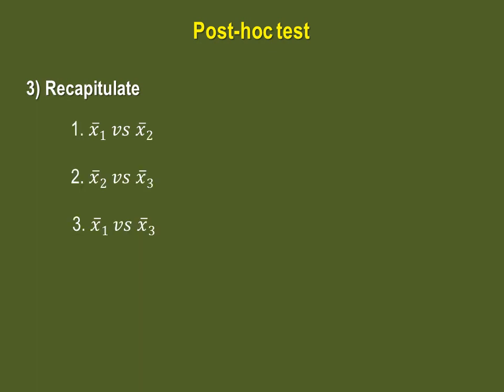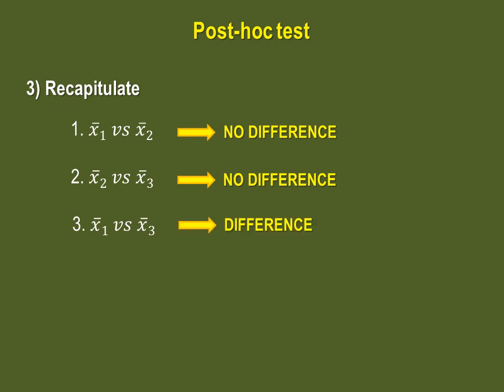Let's recap this. There is no significant difference between the first two strawberry varieties. There is no significant difference between the second and third variety. There is a significant difference between the first and third variety. As such, we can state that the only significant difference lies between variety 1 and variety 3.